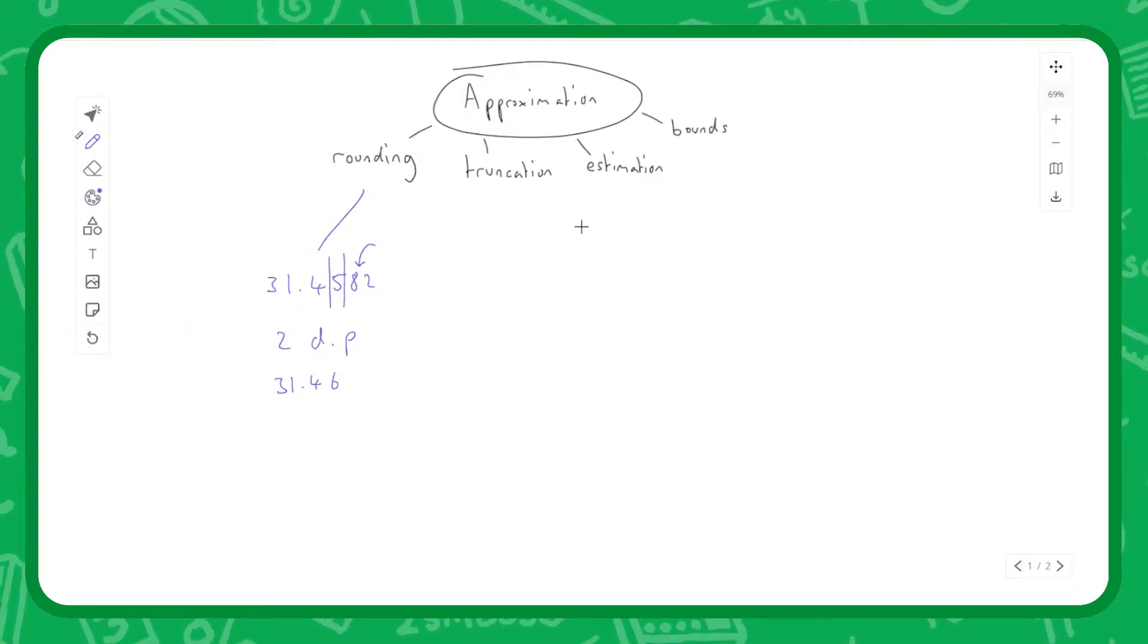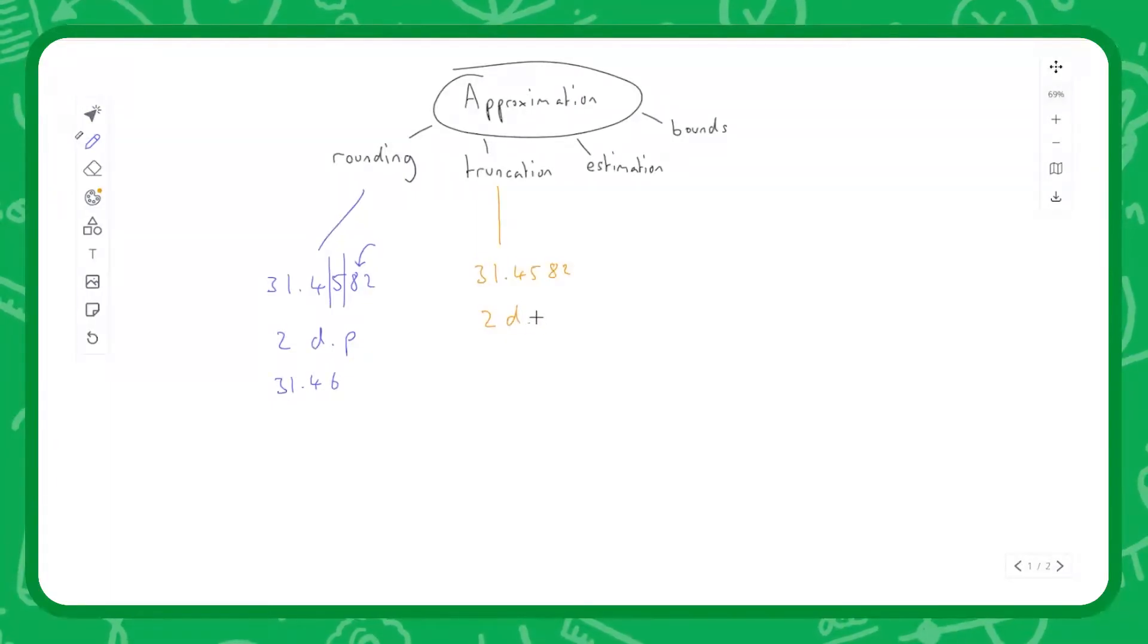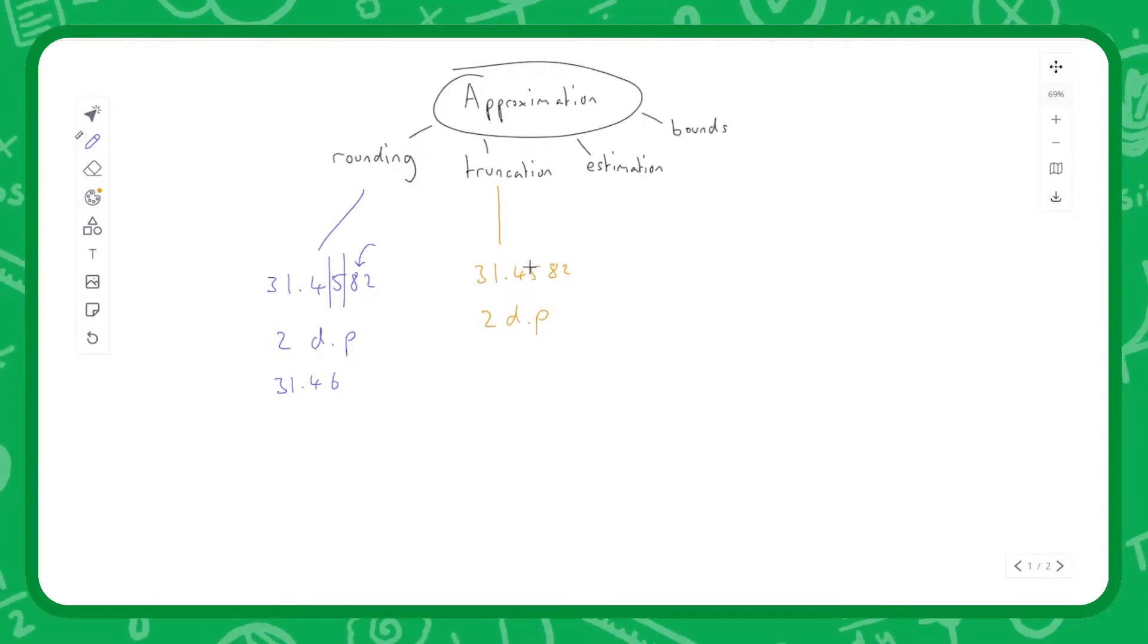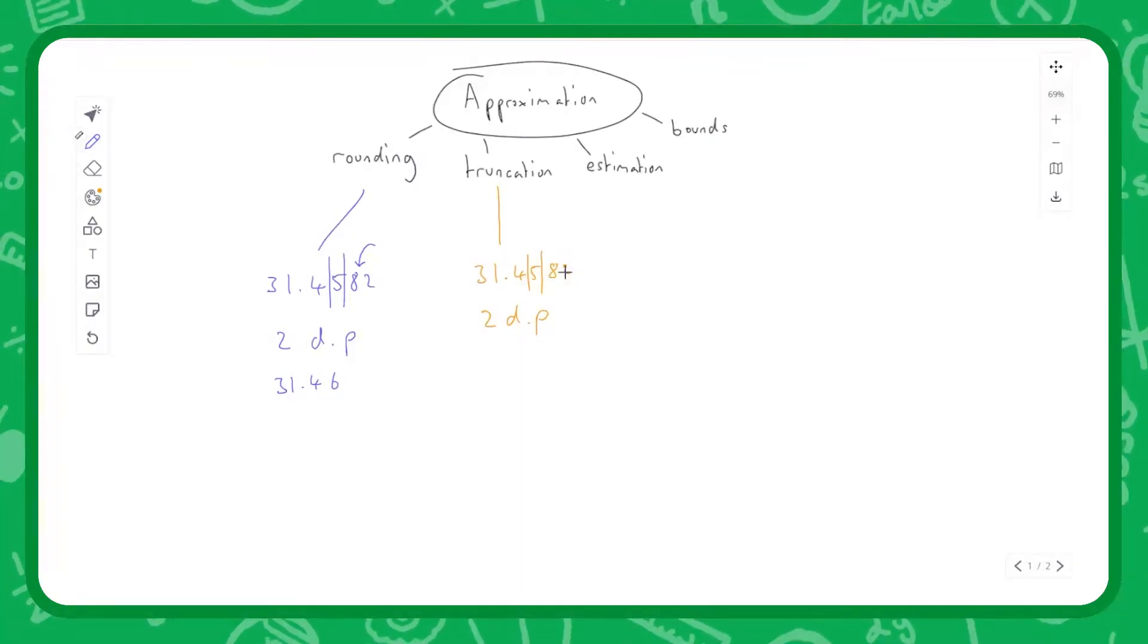Next up is truncation. Truncation is almost like a lazier version of rounding - it's what calculators and computers do. We can look at the same number again, 31.4582, and again we're going to truncate this to two decimal places. Well, all truncation does is it chops off the end of the number.